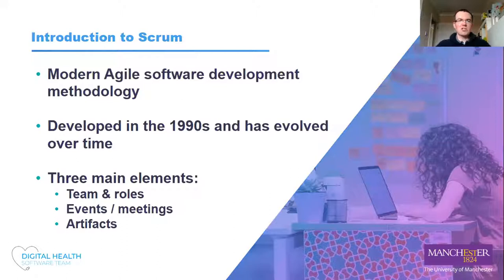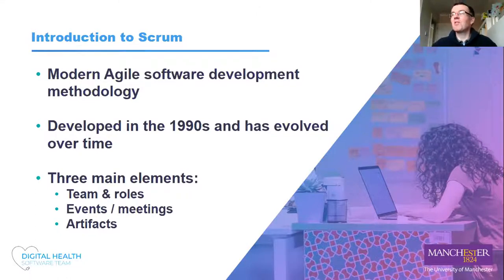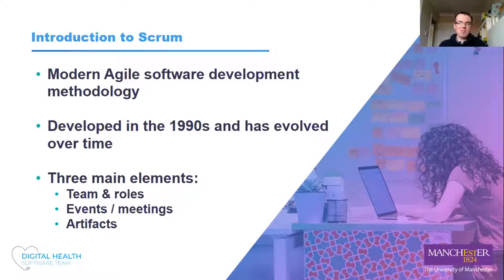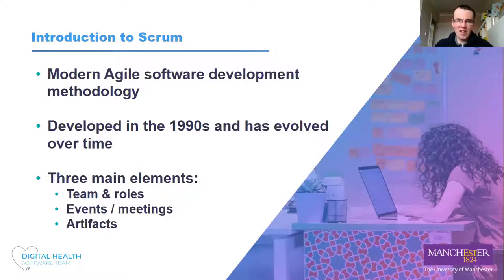So what is Scrum? It's a modern agile software development methodology. It was developed in the 1990s and has evolved quite a lot over time. It grew up in software, and nowadays it's used in other industries, although software is probably still the area where it's used most. At a very top level, it consists of three main elements: team roles, a series of events or meetings, and some artifacts — things that get created by the Scrum methodology.